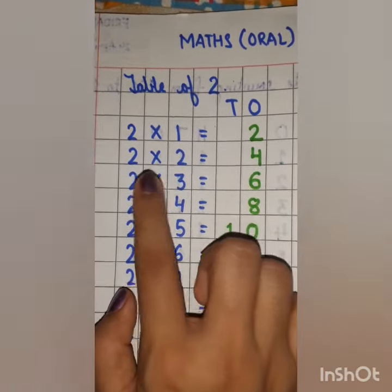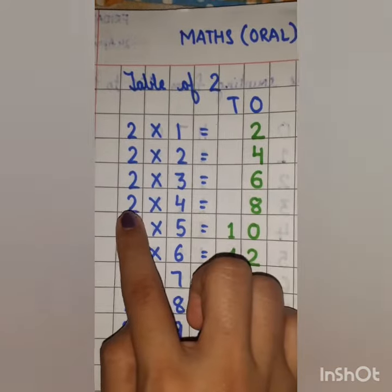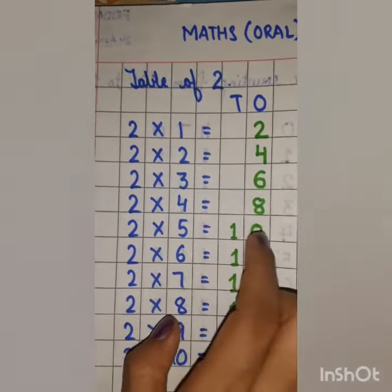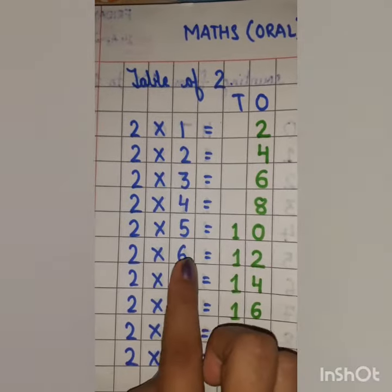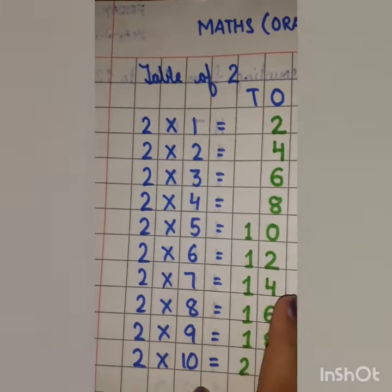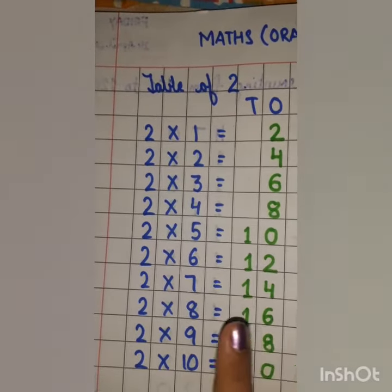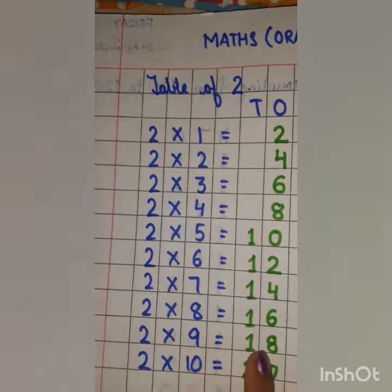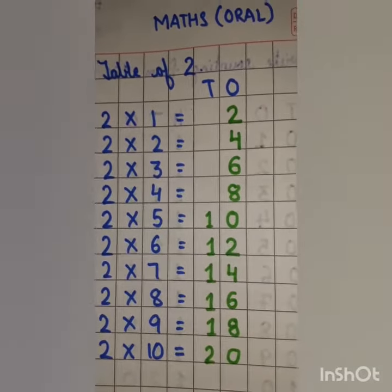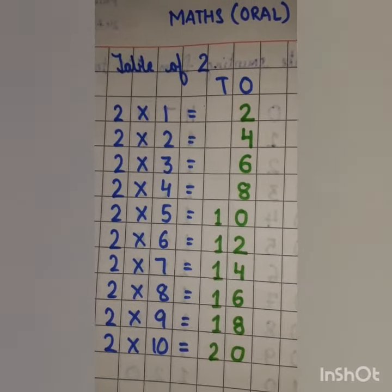Again: 2 1s are 2, 2 2s are 4, 2 3s are 6, 2 4s are 8, 2 5s are 10, 2 6s are 12, 2 7s are 14, 2 8s are 16, 2 9s are 18, 2 10s are 20.